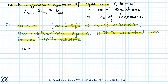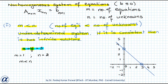Consider the system x plus y equals 3. Here m equals 1 and n equals 2, so m is less than n. We know that x plus y equals 3 is the equation of a straight line in the 2D plane, and every point lying on this line satisfies the equation, so the system is consistent and has infinitely many solutions.